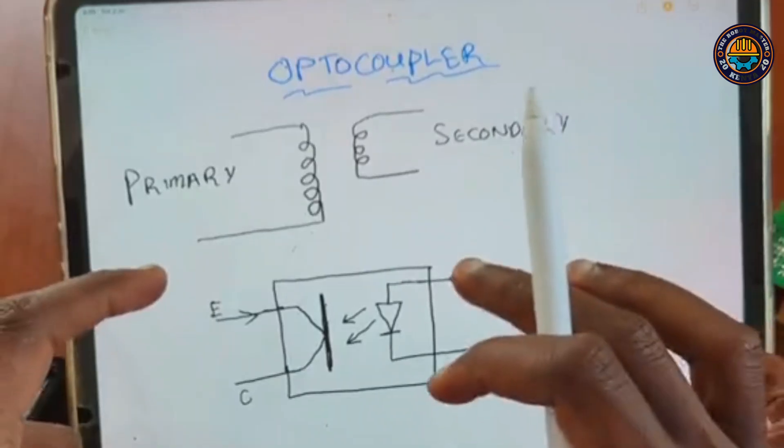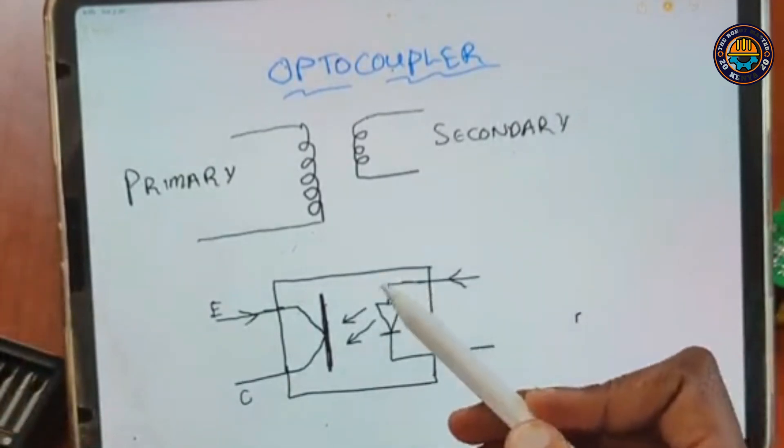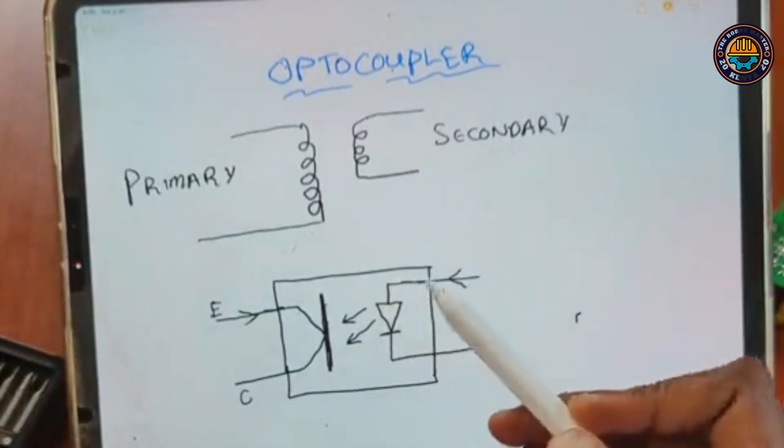And on optocoupler, this is what you will find. We have an LED, a light emitting diode, that is connected on the secondary.